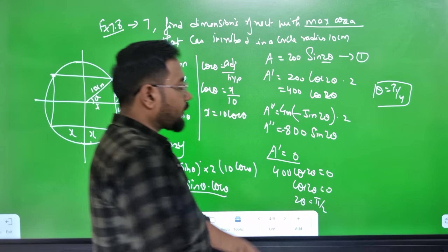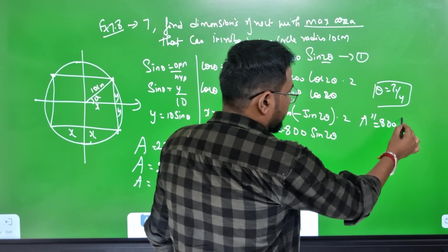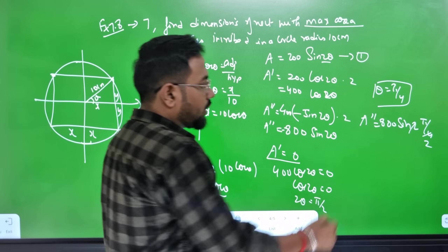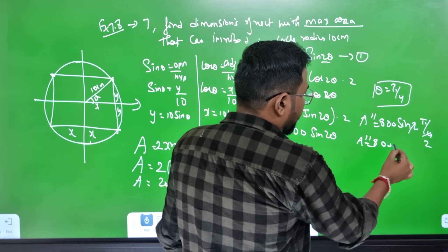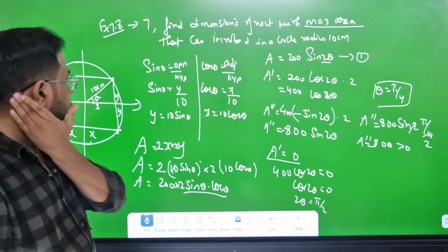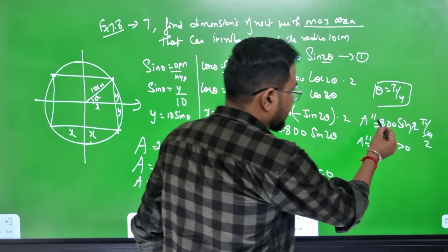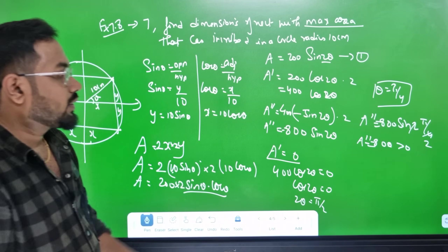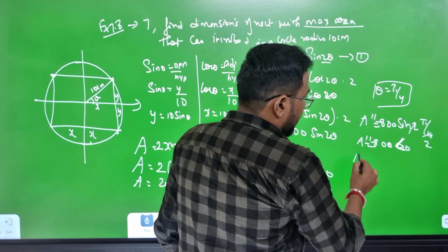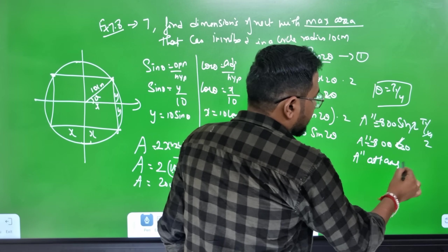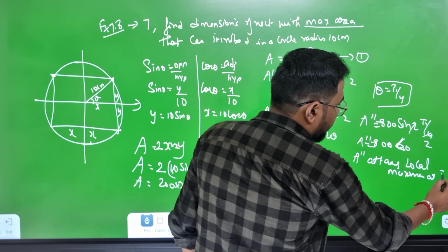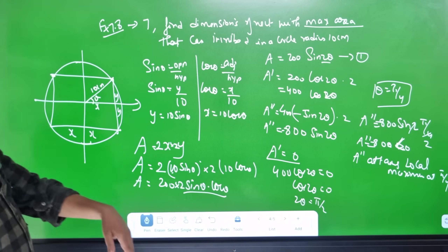Computing the second derivative: A'' = −800sin2θ. At θ = π/4: A'' = −800sin(π/2) = −800 × 1 = −800, which is negative, confirming a local maximum at θ = π/4.